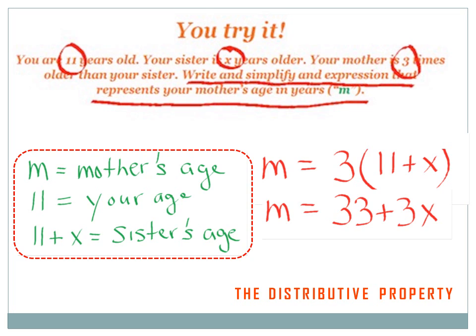What C-U-C-C means is when you get a word problem like this, first of all, if there are numbers in the word problem, they're going to be part of the solution because this is a math question and we deal with numbers. So let's read the question. You are 11 years old — there's a number, let's circle it. Your sister is x years older — x is a variable which represents a number, it must need to be circled. Your mother is three times older than your sister — there's another number, let's circle it. Write and simplify an expression that represents your mother's age in years. That's what we're supposed to do, so let's underline it.